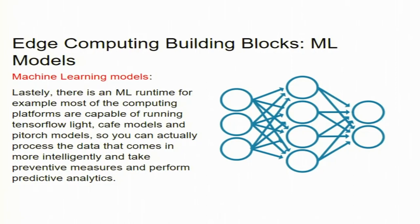Edge computing building blocks also now support machine learning models. There is a machine learning runtime — for example, most computing platforms are capable of running TensorFlow Lite, Caffe models, and PyTorch. You can process data more intelligently to take preventive measures and perform preventive and predictive analytics. These platforms — TensorFlow, Caffe, PyTorch — which support machine learning models can now also be run at the edge by supporting these capabilities.